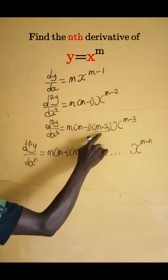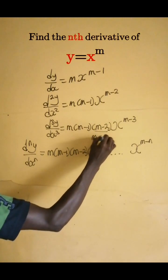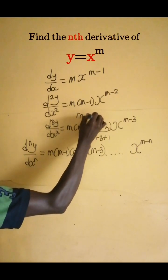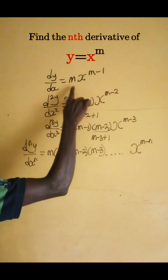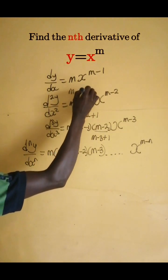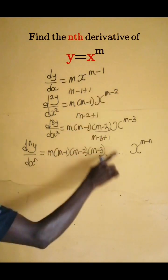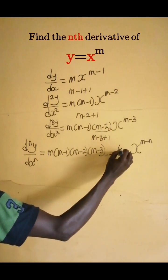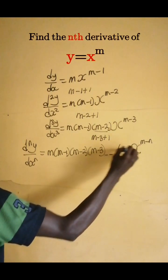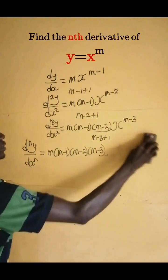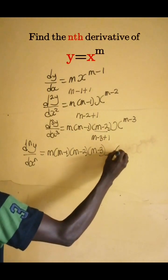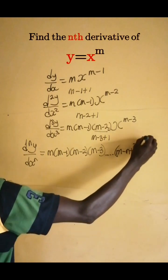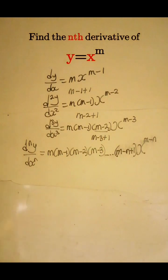Let's see what will be there. If you look at it, the exponent m minus 3 can be written as m minus 3 plus 1, and m minus 2 can be written as m minus 2 plus 1, and m minus 1 as m minus 1 plus 1. So following this pattern, we can put there up to m minus n plus 1, times x to the power m minus n.